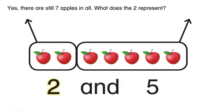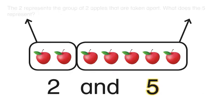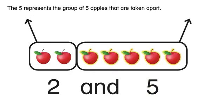What does the two represent? The two represents the group of two apples that are taken apart. What does the five represent? The five represents the group of five apples that are taken apart.